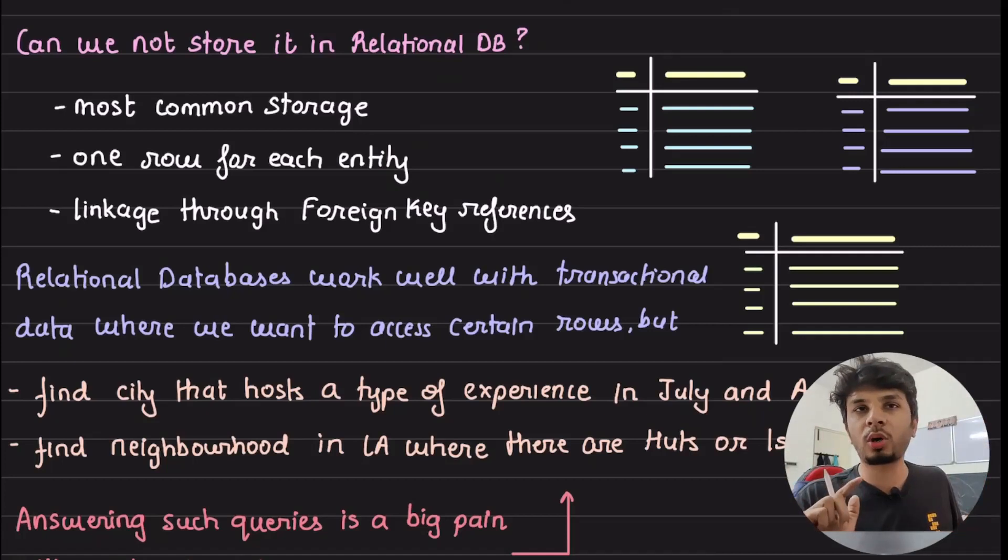So relational databases are meant to work very well with transactional information, for example, payments the way we do it, for users, posts, even for the transactional thing where I'm getting something, putting something, that sort of stuff. On an individual entity level, it works really, really well.